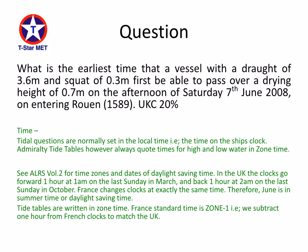In this question we have two problems in understanding it. Initially it is time. Tidal questions are normally set in local time, for example the time on the ship's clock. Admiralty timetables however quote times for high and low water in zone time. In the UK the clocks go forward one hour at 1am on the last Sunday in March and back one hour at 2am on the last Sunday in October. France changes clocks at exactly the same time, therefore August is in summer time or daylight saving time. The timetables are written in zone time. France's standard time is zone minus one — we subtract one hour from French clocks to match UK clocks. When the UK goes to daylight saving time, so does France.